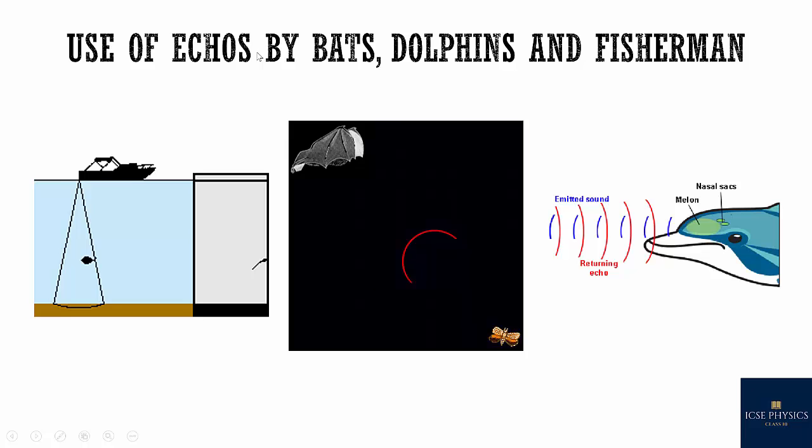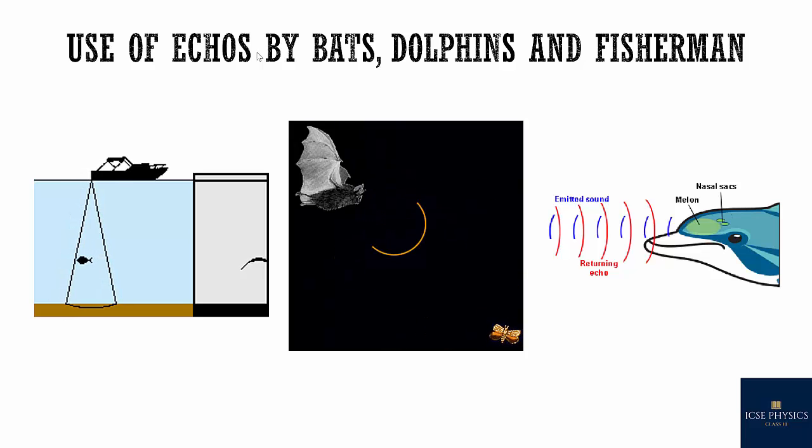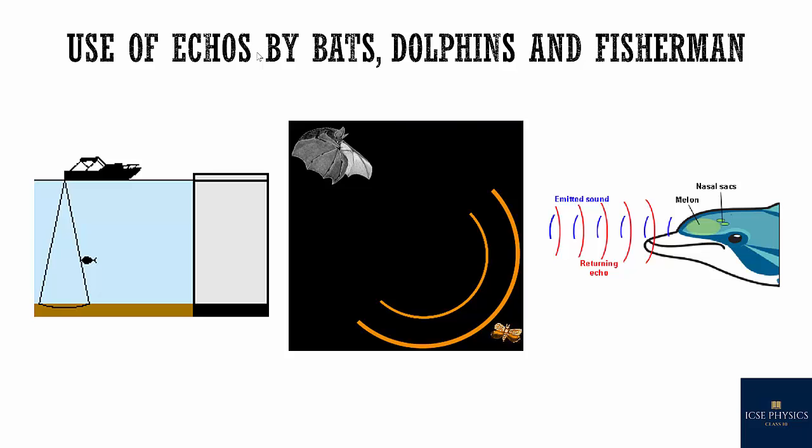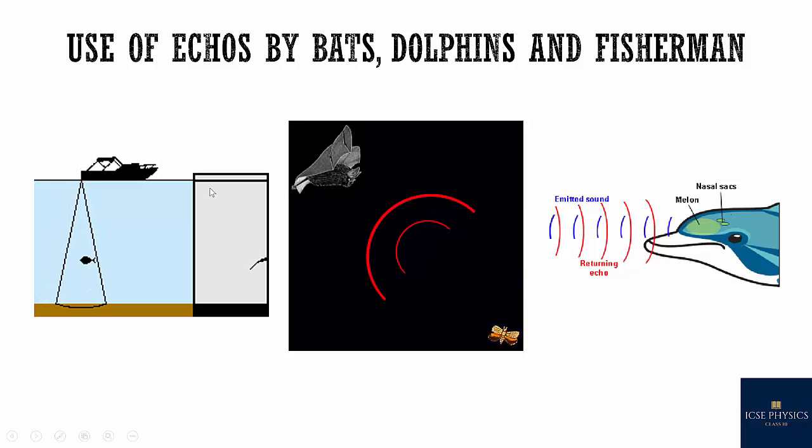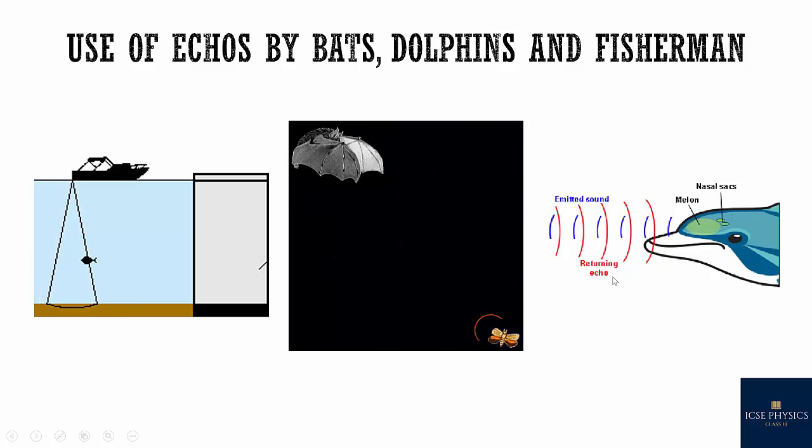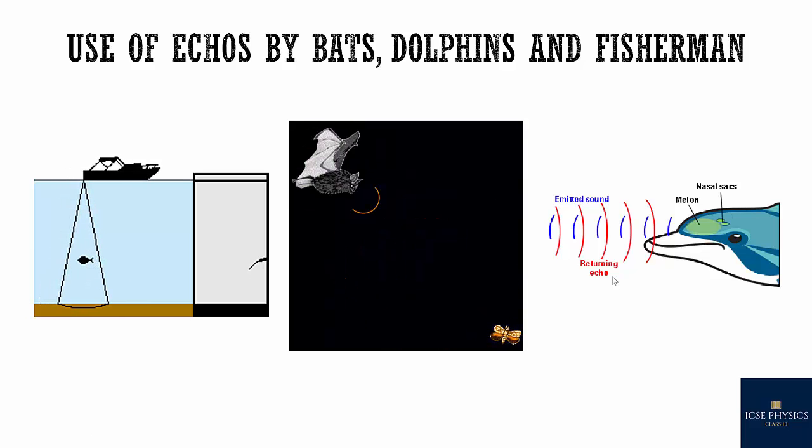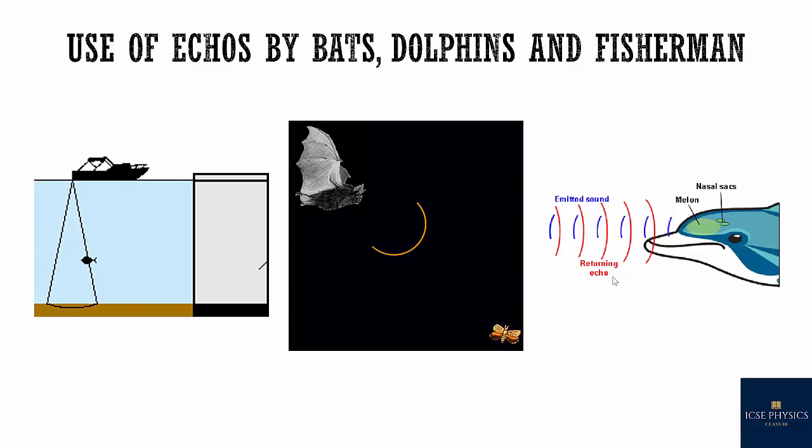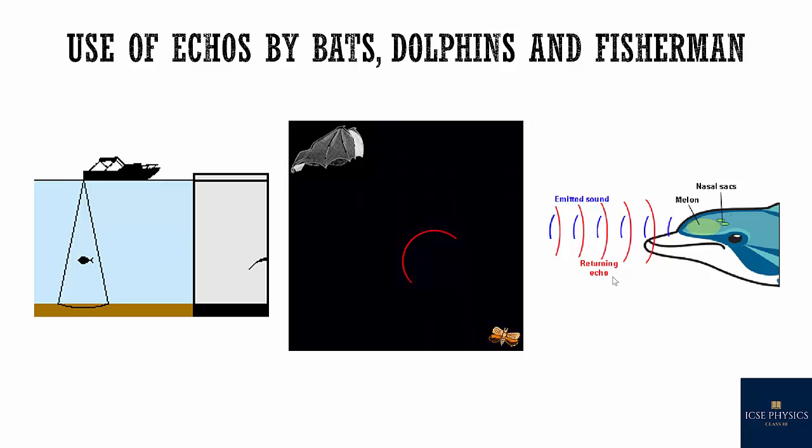So use of echoes by bats, dolphins and fishermen. Let's see how they use echoes. Echoes find the application in sound ranging and echo depth sounding by using ultrasonic waves. But how do animals use echo? Dolphins detect their enemy and obstacles by emitting ultrasonic waves that is of frequency more than 20,000 hertz. And hearing the echo, they use ultrasonic waves for hunting their prey.